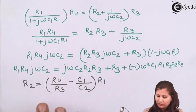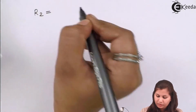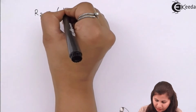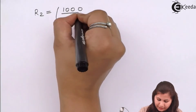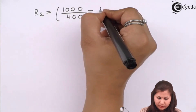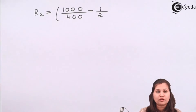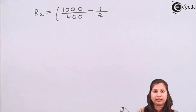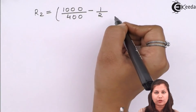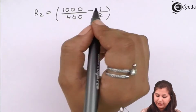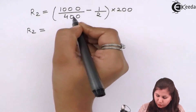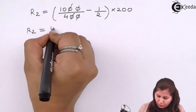Substituting the known values: R4 = 1000 ohms, R3 = 400 ohms, C1 = 1 µF, C2 = 2 µF, R1 = 200 ohms. Since both capacitances are in microfarads, the 10⁻⁶ factors cancel in the ratio C1/C2. Solving gives R2 = (1000/400) − (1/2)·200 = 2.5·400 − 100 = 400 ohms.